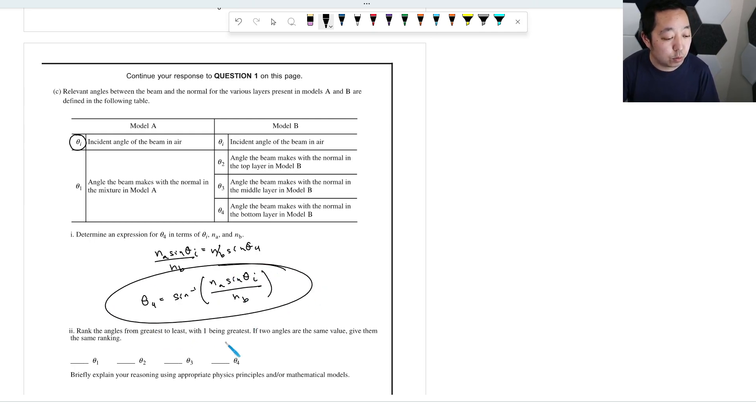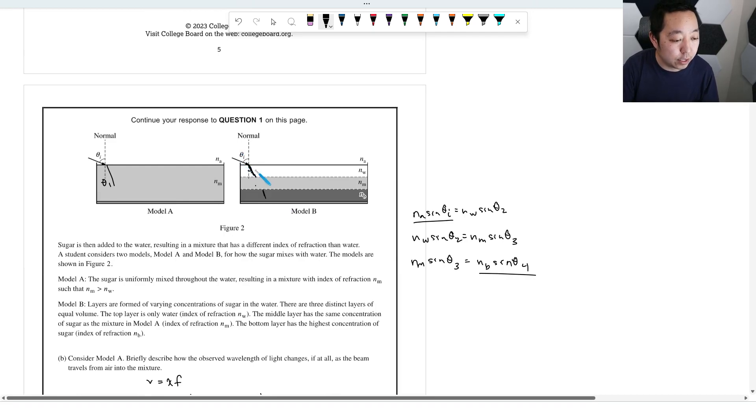Rank the angles from greatest to least with one being the greatest. If two angles are the same value, give them the same ranking. Basically, every time the index of refraction increases, every time you go through a higher index of refraction, the angle is going to ultimately get smaller. Like it's going to shrink, and then it's going to shrink, and then it's going to shrink. So you're always going to be constantly decreasing the angles.